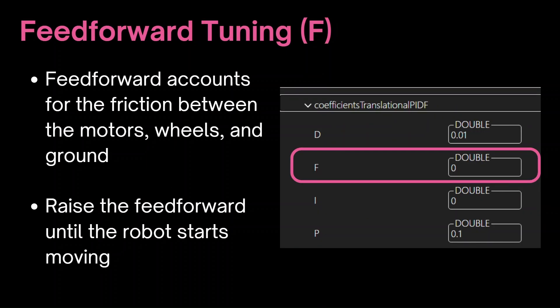We can first start with tuning the feed forward. The feed forward accounts for the friction between the motors, wheels, and ground and sets a minimum power output for the motors to compensate for this. To tune it we can set all other P, I, and D values to zero and slowly increase the F term bit by bit until the robot starts to move. Then we can decrease the feed forward term from there.